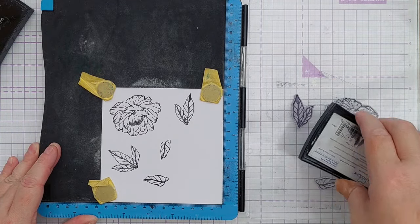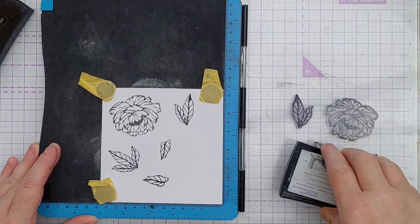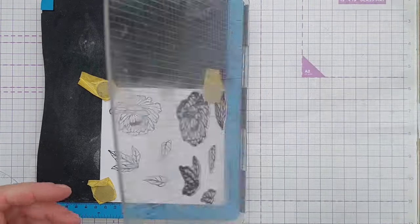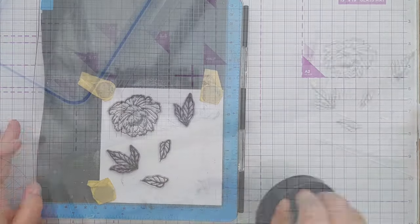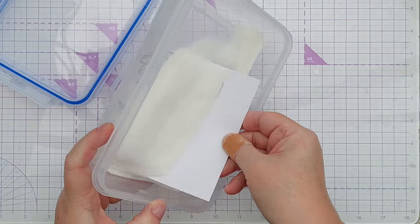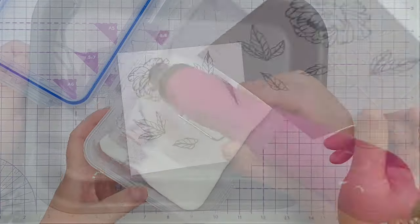Stazon is a waterproof ink so I didn't need to do the clear embossing to waterproof my inking. I did it because I wanted to have a slightly raised glossy black image that I could watercolor within.